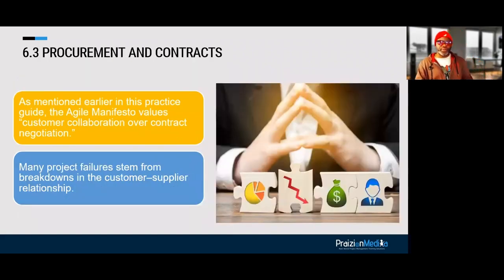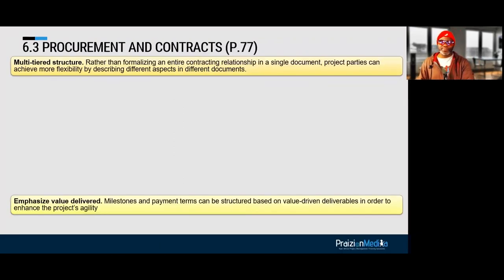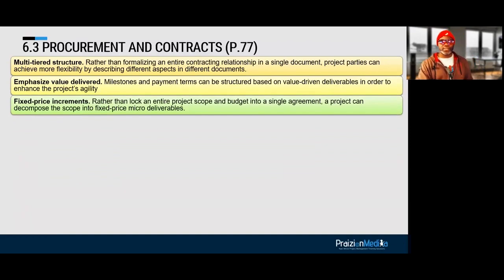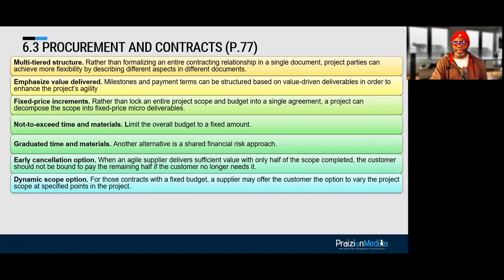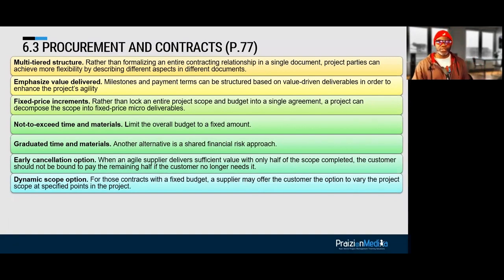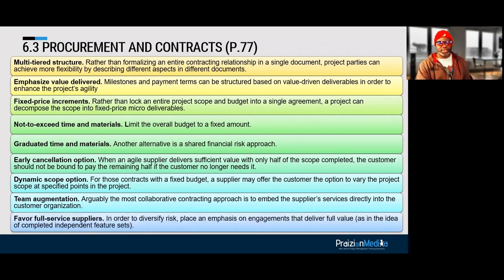We also talk about procurements and contracts on page 77. I would highly advise knowing those contract types: multi-tiered, emphasizing value delivered, fixed price increments, NTE time and materials, graduated time and materials, early cancellation giving people an off-ramp, dynamic scope option, team augmentation, and favoring full service suppliers.